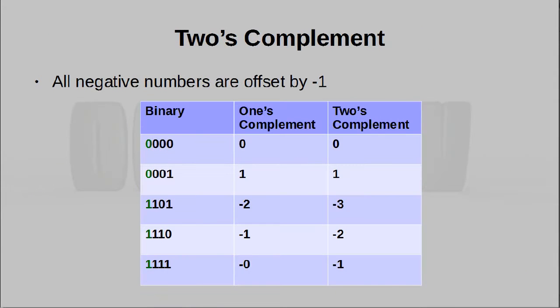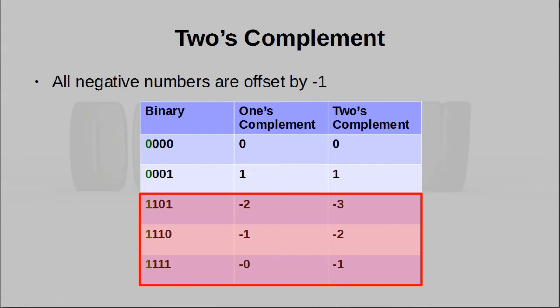2's complement is the technique that works around this problem. All negative numbers are offset by 1, so that we end up with one more negative number at the end, and just one version of 0.